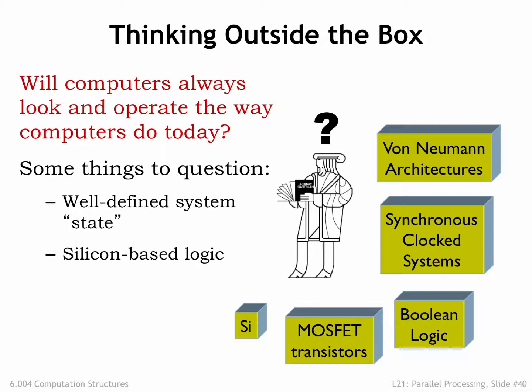We've built our systems using voltages to encode information and voltage-controlled switches to perform computation using silicon-based electrical devices. But the chemistry of life has been carrying out detailed manufacturing operations for millennia, using information encoded as sequences of amino acids. Some of the information encoded in our DNA has been around for millions of years — a truly long-lived information system. Today biologists are starting to build computational components from biological materials. Maybe in 50 years, instead of plugging in your laptop, you'll have to feed it.